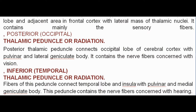Posterior occipital thalamic peduncle: this peduncle connects the occipital lobe of cerebral cortex with the pulvinar and lateral geniculate body. It contains nerve fibers concerned with vision.